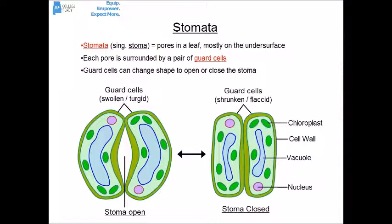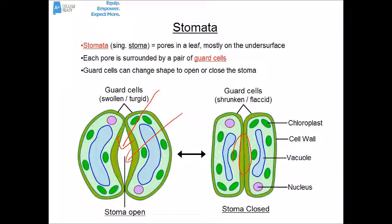The stomates are almost like the nostrils of a plant — the breathing holes — typically bringing CO2 in and sending oxygen out. On either side of a stomate are guard cells; when they're swollen and turgid, the stomate is open. When the guard cells shrink and become flaccid, the stomate closes. In very hot, dry conditions the guard cells close up the holes, helping the plant retain water — but also leading to photorespiration issues.